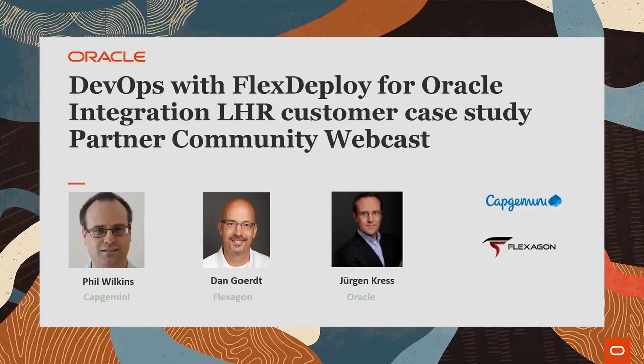We are also joined by Dan Geert, President of Flexagon. Dan is one of the first users of SourceSuite and developed FlexDeploy — a DevOps automation platform to increase the speed of developing and delivering Oracle-based technology solutions. At London Heathrow Airport, Oracle Integration was implemented to connect with Oracle Source, delivered on time and budget using the Capgemini Agile Innovation Platform, with CI/CD and release automation based on FlexDeploy.